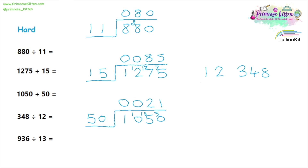348 divided by twelve. How many twelves will go into three? Zero — carry the three over. How many twelves will go into thirty-four? Two times twelve is twenty-four, so we put two up and will have ten to carry over. Then: how many twelves will go into one hundred and eight? Going by your twelve times table, that is nine.